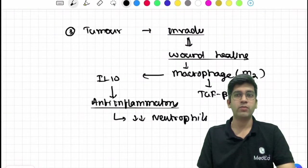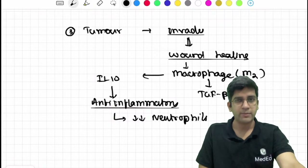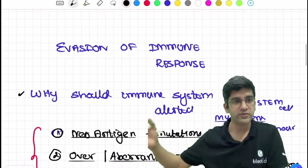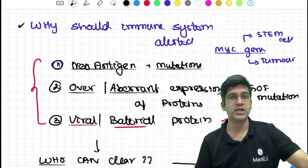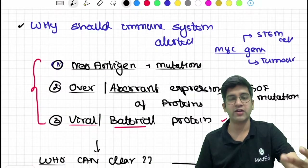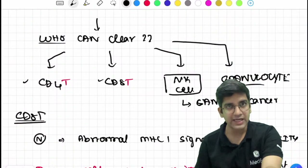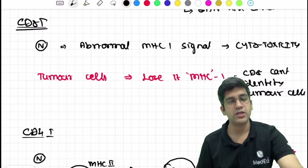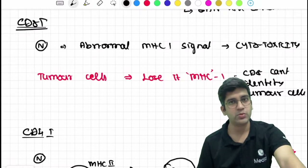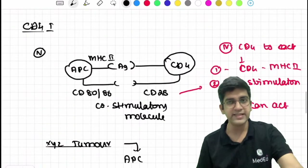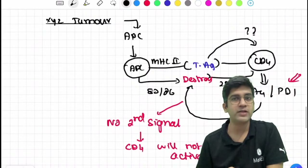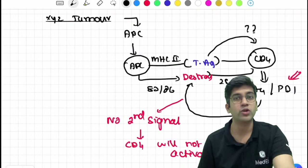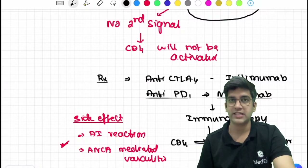So these are the ways a tumor can escape an immune response. Quick recap: why should a tumor be considered a pathogen - neoantigen formation, overexpression of proteins, or viral/bacterial proteins. Once identified, the mechanisms to destroy cancer are CD4, CD8, NK, and granulocytes. NK cells still can destroy cancer, but for CD8 - the best way to escape is to lose MHC1, because CD8's main signal is MHC1, and once MHC1 is lost, CD8 cannot identify cancer. For CD4, I need co-stimulatory molecules; when a tumor is presented, CD4 is told to produce CTLA4 and PD1, which block the second signal, so CD4 will not be activated.